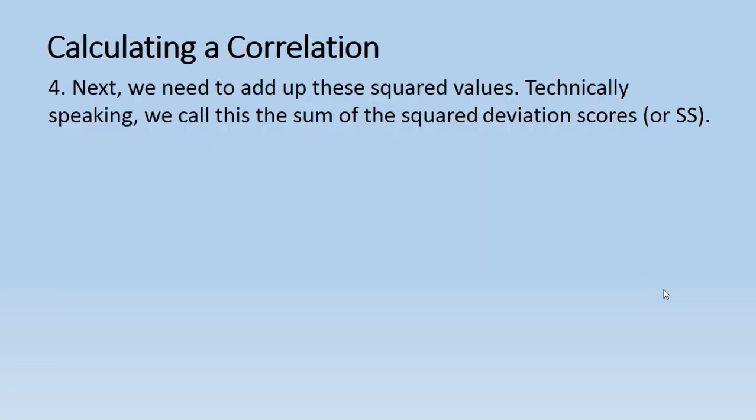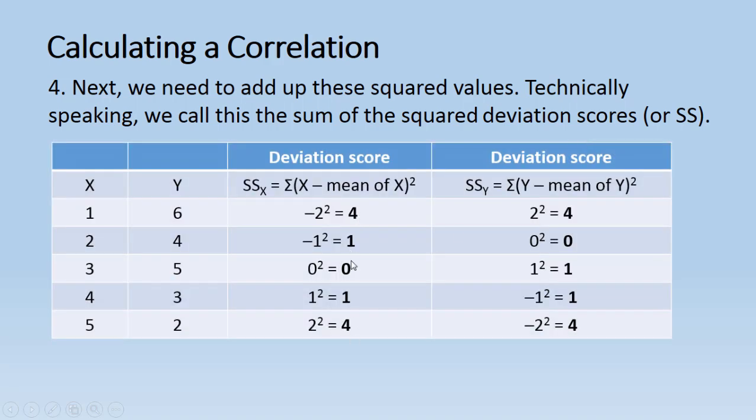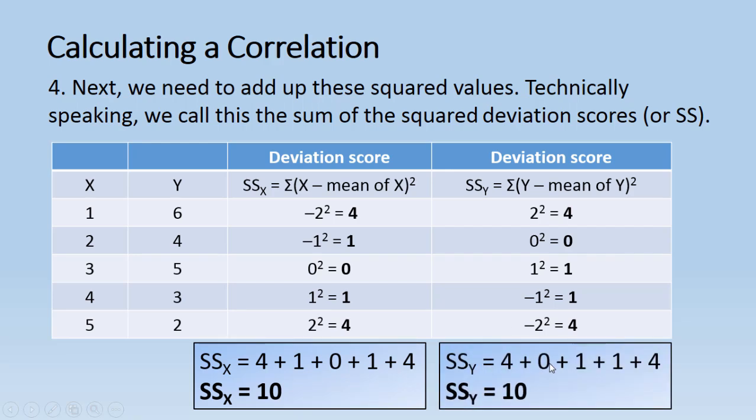Now all we want to do is add up those squared values. Now technically speaking, we do call this the sum of the squared deviation scores. And you may see this in your text or in other places, usually shorthanded as SS, or sum of the squares. So sum of the squares, or SS, is equal to adding up all of the squared deviation scores. So we have our squared deviation scores here for X and for Y. So all we do now is just add those up. And SS, or sum of the squares for X, when we add these values together, gives us 10. And SS for Y also gives us 10. Now it's not always the case when you calculate a correlation that SS X and SS Y will be equal to each other. That just happened to occur in this example.